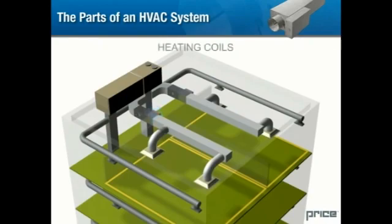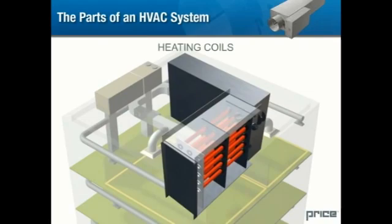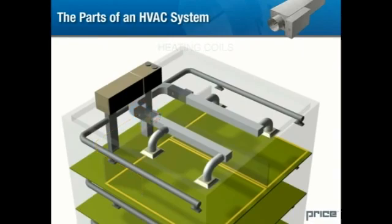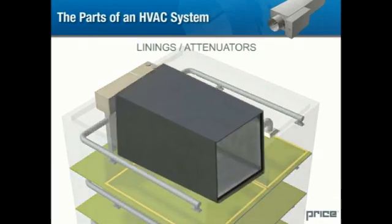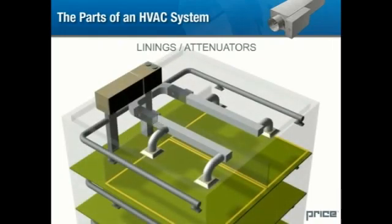Heating coils may be installed after a terminal unit to provide heat on a zone-by-zone basis. Buildings with a high number of occupants may not require extensive heating even during the coldest months of the year. Heating coils offer an efficient way of providing heat for those few areas that require it, and are controlled by the same thermostat system as the terminal unit. Various types of linings are available to dampen noise within a duct. A short length of lined ductwork, called an attenuator, is often installed following the terminal unit to dampen discharge noise.